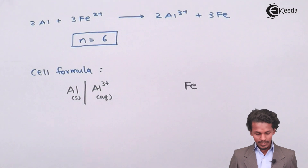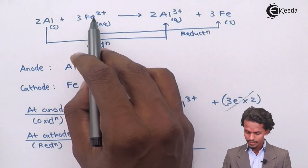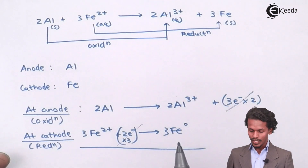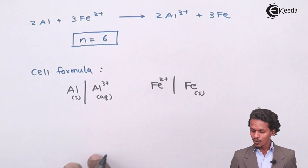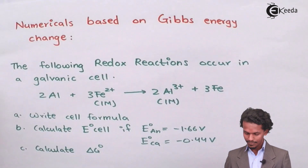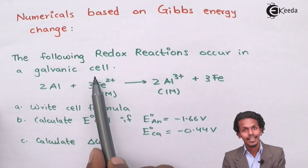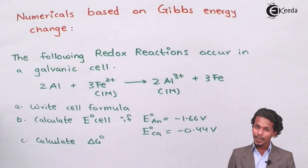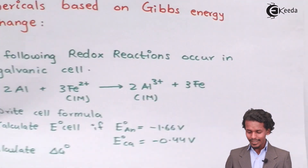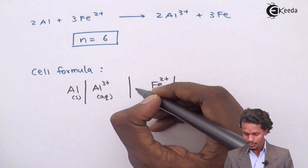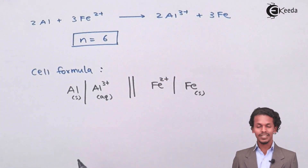On the cathode side, Fe²⁺ in aqueous state is converted into Fe in solid state. So we write Fe²⁺(aq) | Fe(s), with Fe represented at the extreme right. Since this is a galvanic cell, it may involve a salt bridge represented by a double vertical line, or a single vertical line for a semi-permeable membrane. This is how we represent the complete cell formula.